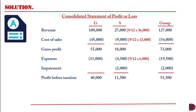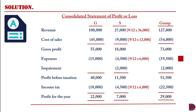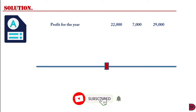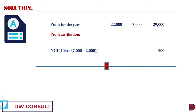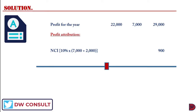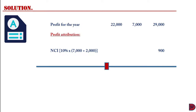Profit before taxation: $40,000 for the parent, $11,500 for the subsidiary, and $51,500 for the group. Income tax: $18,000 for the parent, $4,500 after proration for the subsidiary, and $22,500 for the group. This gives a profit for the year of $22,000 for the parent, $7,000 for the subsidiary, and $29,000 for the group. For profit attribution, we migrate the profit for the year: $22,000 for the parent, $7,000 for the subsidiary, $29,000 for the group.